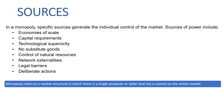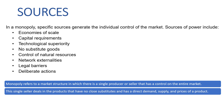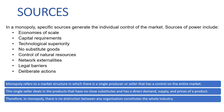Monopoly refers to a market structure in which there is a single producer or seller that has control over the entire market. This single seller deals in products that have no close substitute and has direct influence over demand, supply, and price of a product. Therefore, in a monopoly, the organization constitutes the whole industry.